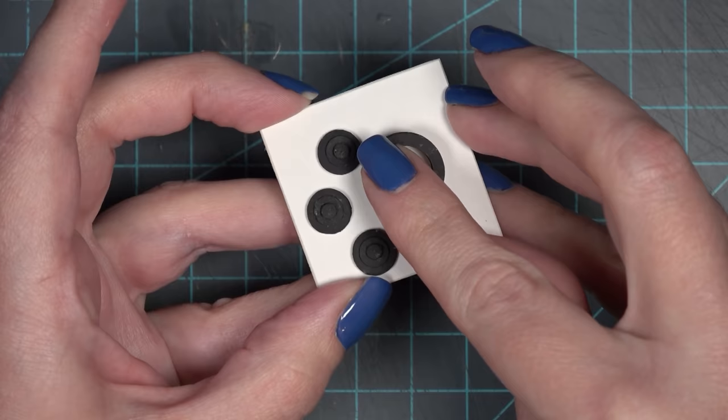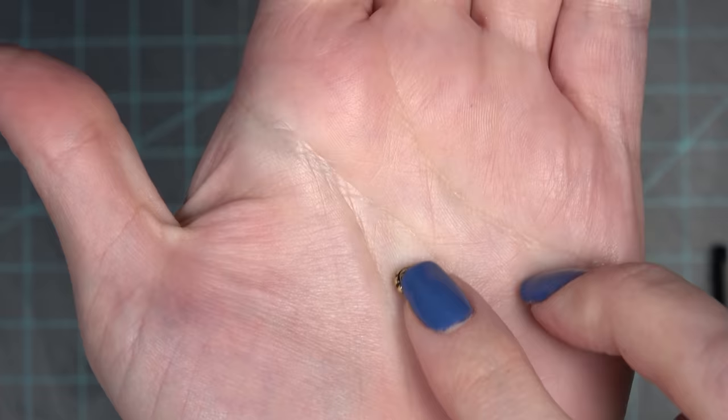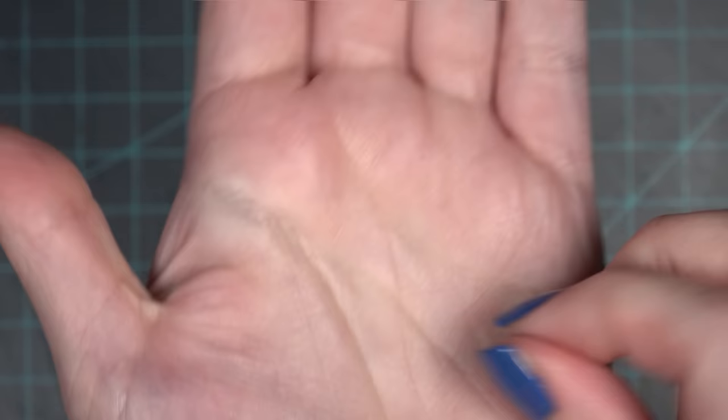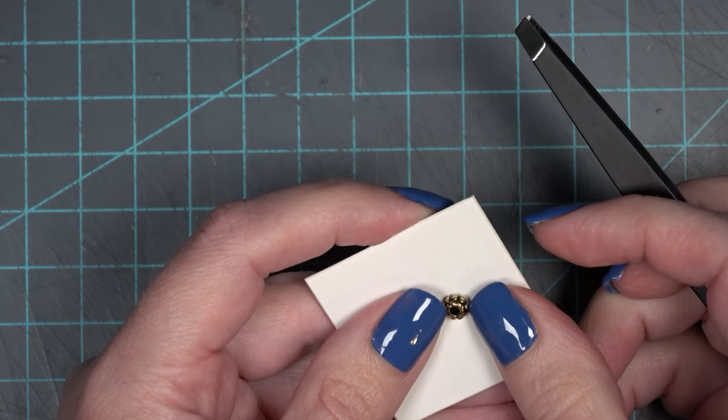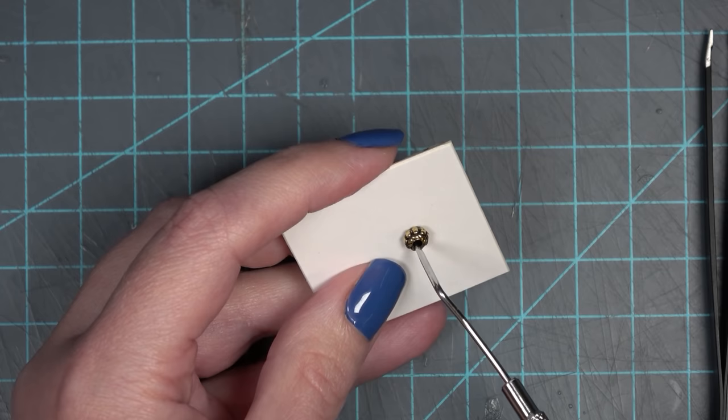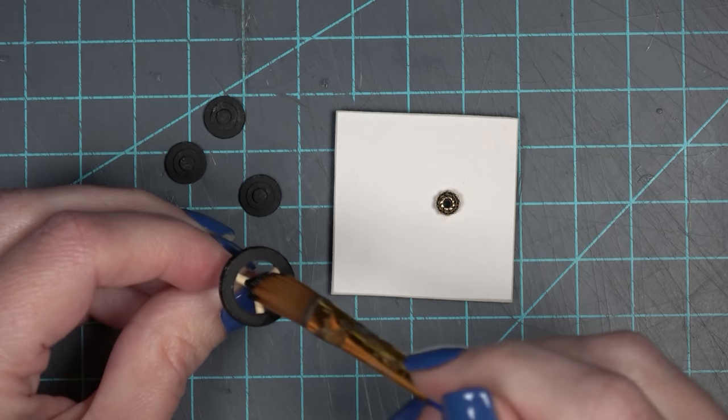Before I glue the dials in place I want to make sure and put the wheel handle into the door so I make sure I have everything spaced out correctly. I did feel like I needed a spacer between the wheel handle and the face of the door so I put some super glue on this small bead. I made sure it was a size that the toothpick could go through so now I have a spacer that will keep the wheel handle from hitting the face of the door.